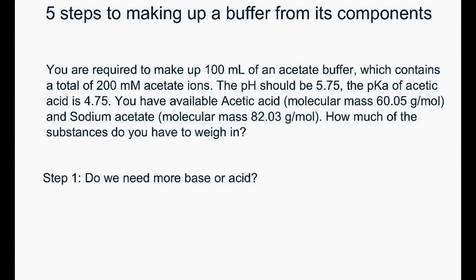Hello everybody. In this tutorial I want to show you the five important steps to make up a buffer solution from its components. For example, you are required to make up 100 milliliters of an acetate buffer. This buffer should contain a total of 200 millimolar acetate ions. The pH of this buffer should be 5.75, and we know that the pKa of acetic acid is 4.75. You have two components available: acetic acid with a molecular mass of 60.05 grams per mole, and sodium acetate with a molecular mass of 82.03 grams per mole. The question is: how much of these substances do you actually have to weigh in to get this buffer?